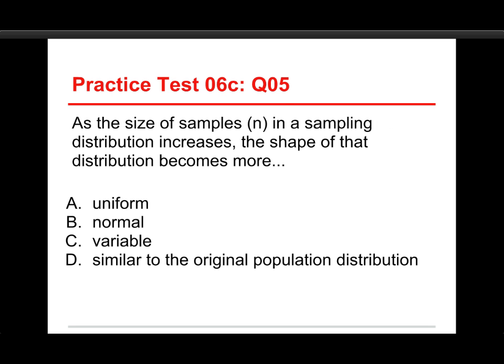As the size of samples n in a sampling distribution increases, the shape of that distribution becomes more A, uniform, B, normal, C, variable, or D, similar to the original population distribution. Well, the answer to this one is normal. Again, uniform means it totally flattens out. That would be an unusual transformation. That's not going to happen. Variable, you know, it's just messing with you. D, similar to the original population distribution. Now, if you looked at that one, you might accidentally think about standardization, where the distribution, once it's been standardized, looks exactly, has the same shape as the original one, but that's not what we're talking about here.